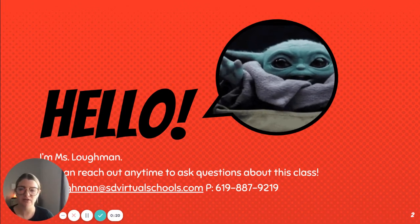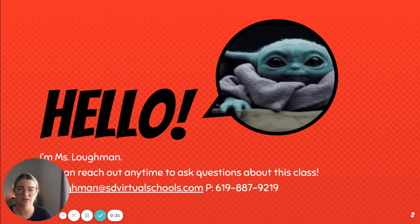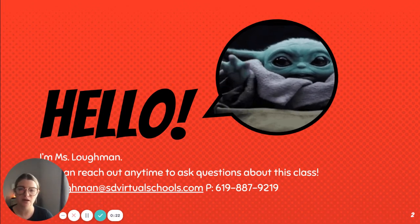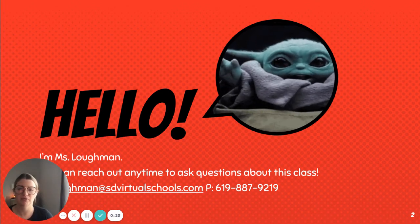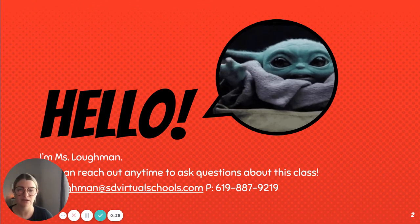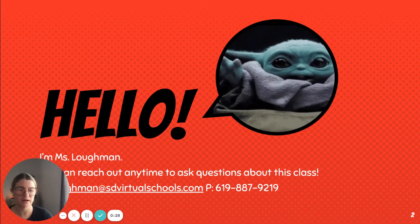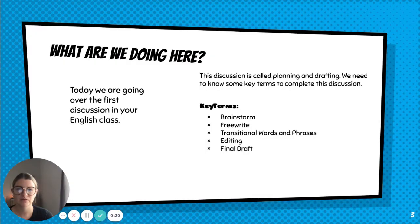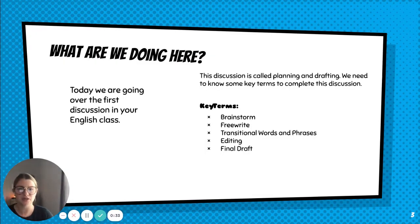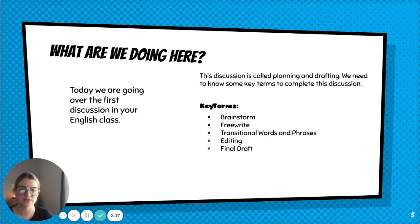My email is jlachman at sdvirtualschools.com, and my phone number is 619-887-9219. So, what are we doing here? We're going to talk about your first discussion. It's called Planning and Drafting, but we need to know some key terms first.